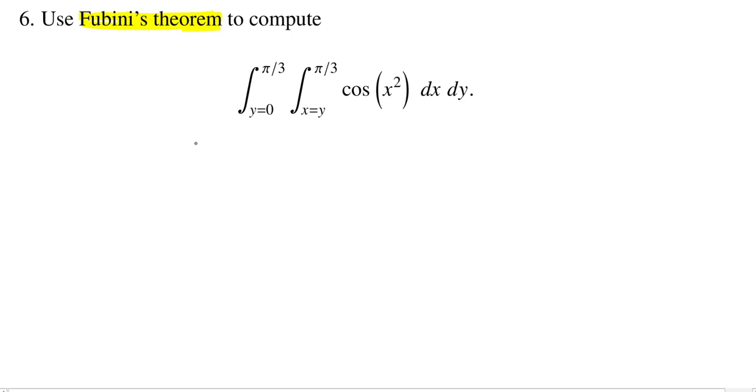So in this case, the underlying domain, let's call it D, is all pairs x comma y, where you see the y's come first, and they're bounded by constants. So this is a type y region. And the y's here go between 0 and pi over 3, and then the x is going to lie between y and pi over 3.